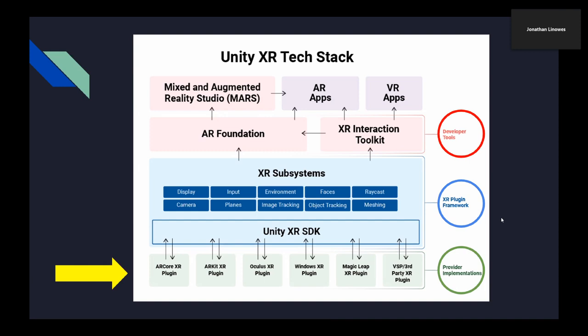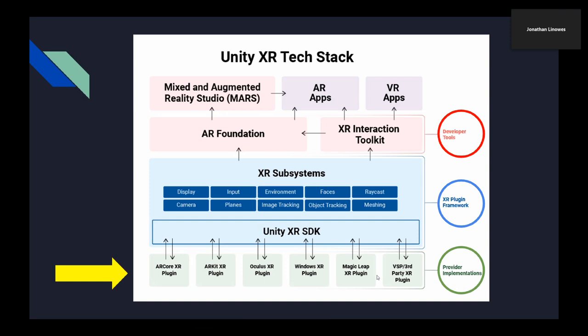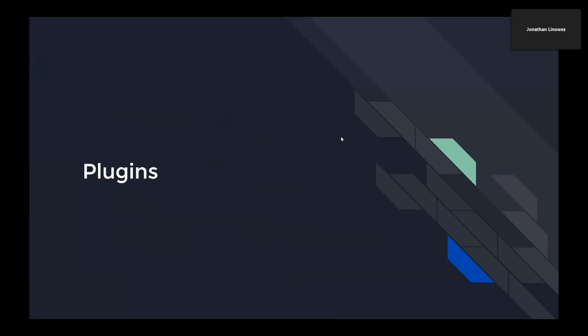Here's a picture showing the overall architecture of the Unity XR platform. Along the bottom row you see the provider implementations — ARCore, ARKit, Oculus, Windows, Magic Leap, and so forth. In the middle are the APIs or SDKs that are part of the core Unity engine — what they call the XR plugin framework. The APIs are exposed downward to the hardware providers and upward to you, the developer. On top of that, Unity is also providing developer tools, specifically AR Foundation and the XR Interaction Toolkit.